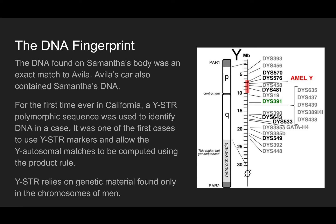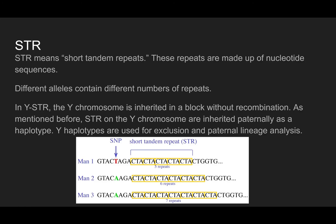STR stands for short tandem repeats, and these repeats are made up of nucleotide sequences. Different alleles contain different numbers of repeats in the human body. In YSTR, the Y chromosome is inherited in a block without recombination, and STR on the Y chromosome are inherited paternally as a haplotype. Y haplotypes are used for exclusion and paternal lineage analysis, making this very helpful in the case.